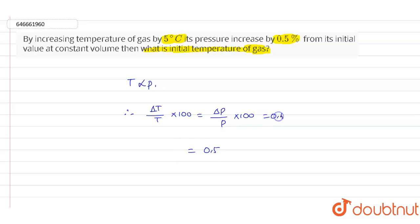This will be equals to 0.5, and we will write the value of capital T as capital T. Value will be equals to 5 into 100 divided by 0.5.